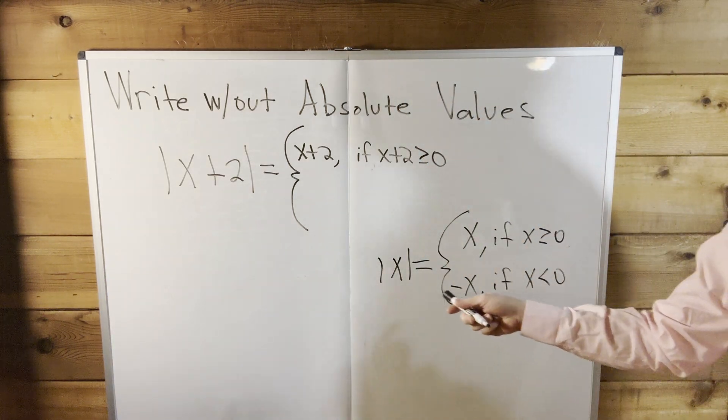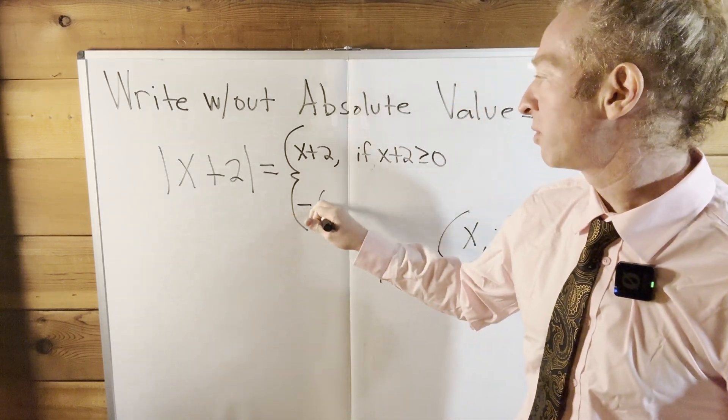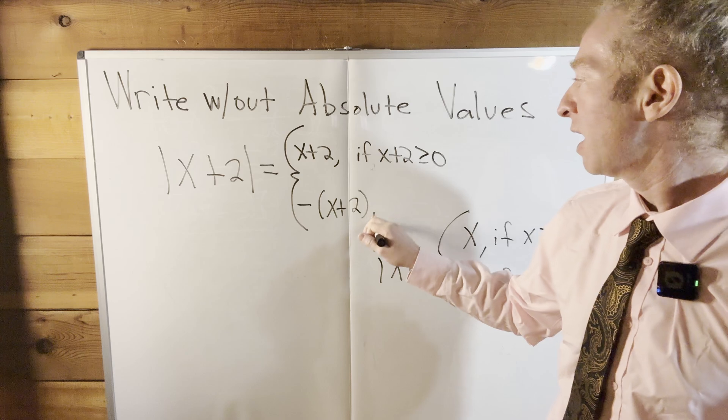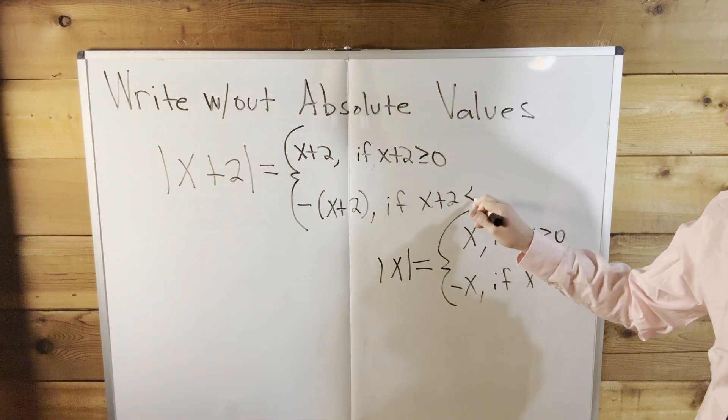And then it's going to be negative x. But in this case, it will be negative x plus 2. So minus parentheses x plus 2. And that's going to be if x plus 2 is less than 0.